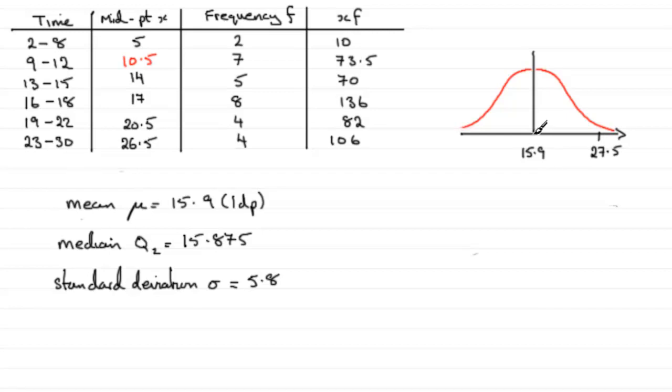And if you take two standard deviations away from 15.9, in other words take 11.6 away from 15.9, you get 4.3. And can you see that this also looks pretty impressive when you compare it to the data here? Going from 4.3 to 27.5, we virtually encompass most of that data.